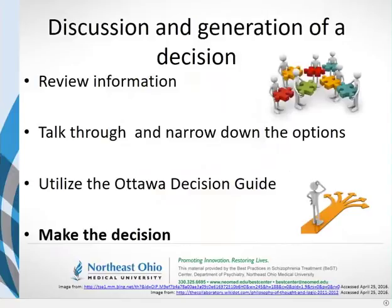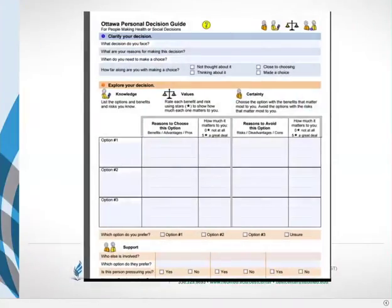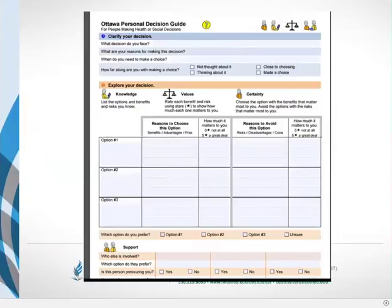The discussion piece is really about reviewing information and narrowing down options. For example, if going off medications right now isn't in the patient's best interest because they don't want to return to the hospital and want to go back to school or work, you continue on the current medication and revisit later — but you address specific side effects they're concerned about, such as movement disorders. Resources like the Ottawa Personal Decision Guide help narrow options further. Patients rank each option — here's why I could choose it and how important that is to me, and why I may not choose it — providing important information for both inpatient and outpatient settings.